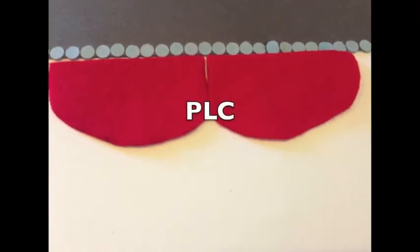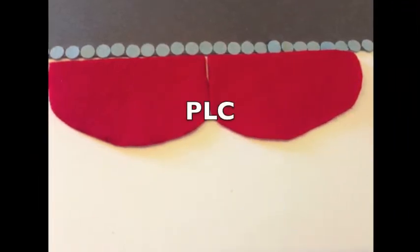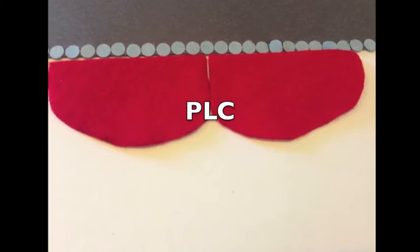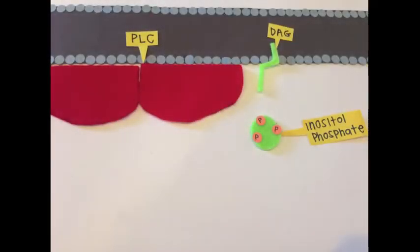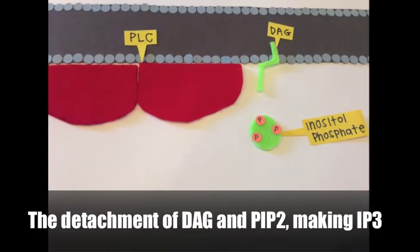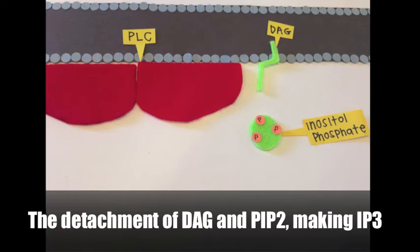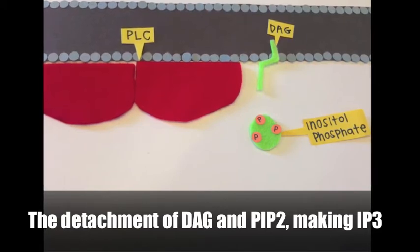What does PLC activate? Oh goodness, you're right again, the detachment of DAG and PIP2 making IP3.